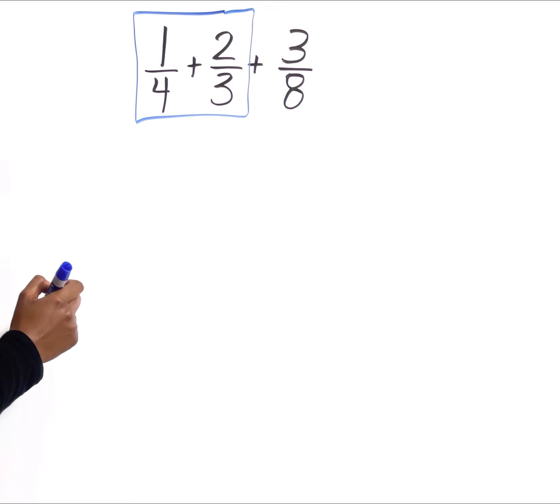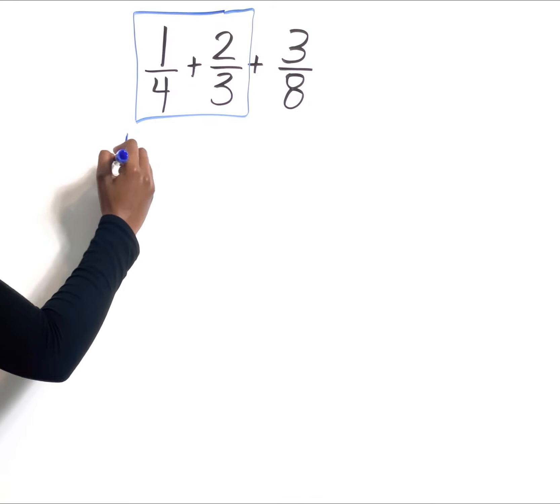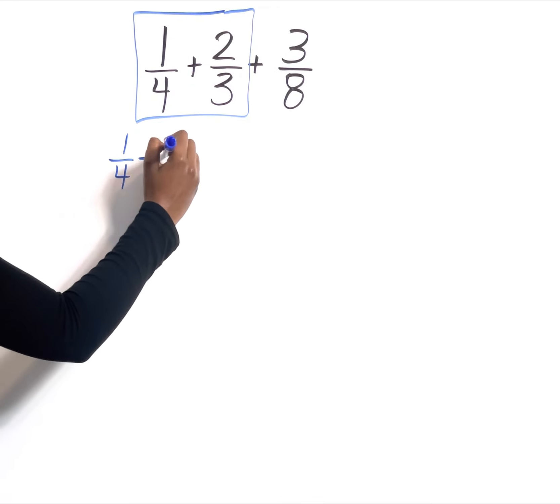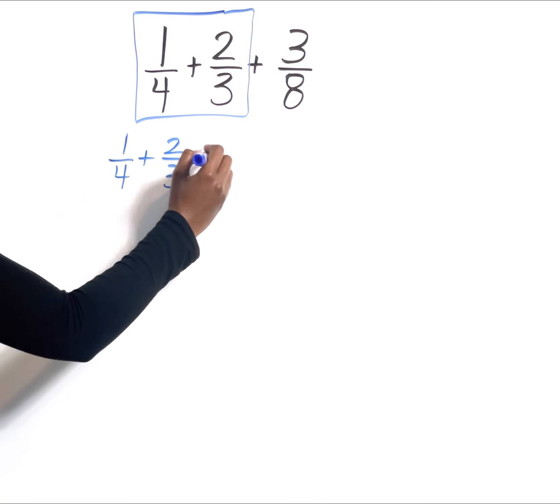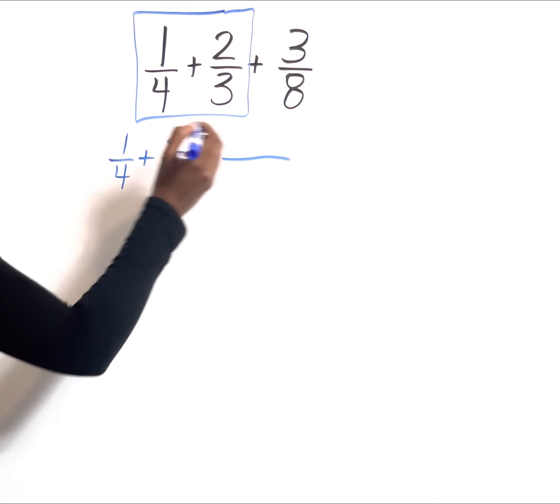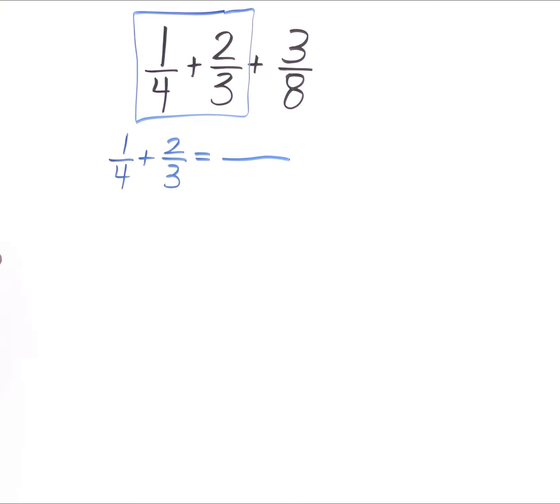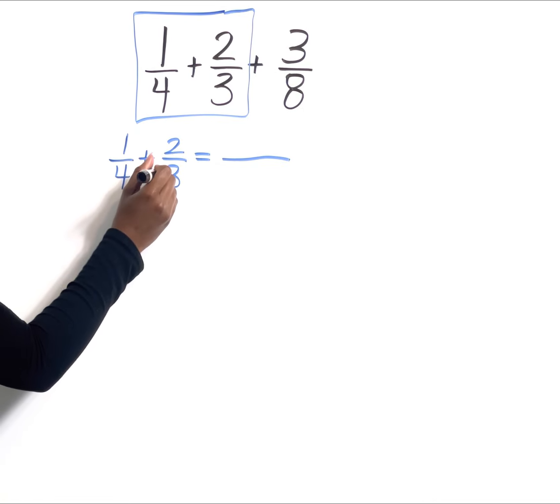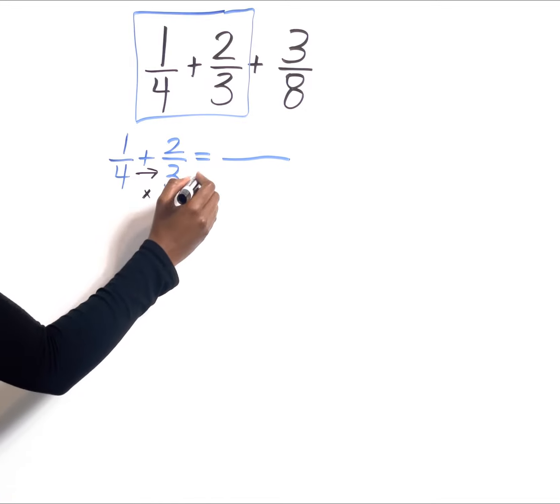So we have 1/4 + 2/3. We are going to use the butterfly method because it's one of the easier methods if you never really learned how to complete fractions using the least common denominator. We're going to multiply straight across the bottom, so 4 and 3 are going to give us 12.